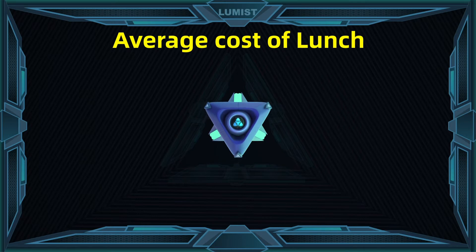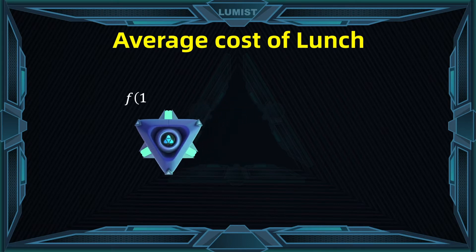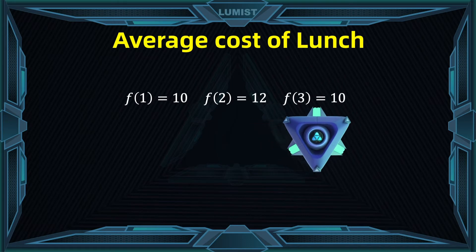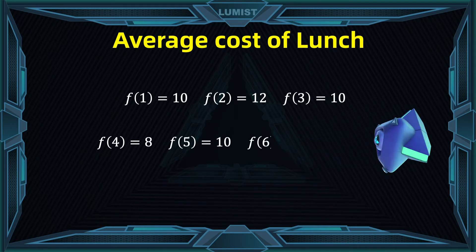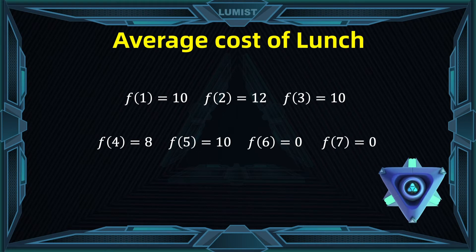In our case, Monday is going to represent the first day of the week. So f of 1 is 10, f of 2 is 12, f of 3 which is Wednesday is equal to 10. Then f of 4 is 8, f of 5 is 10. And then during the weekend on Saturday and Sunday we spend no dollars, so f at those days is equal to 0.